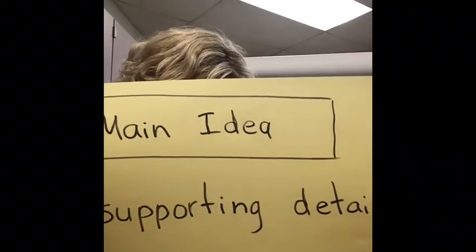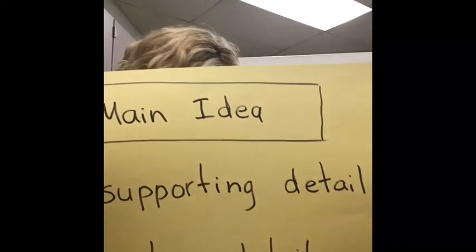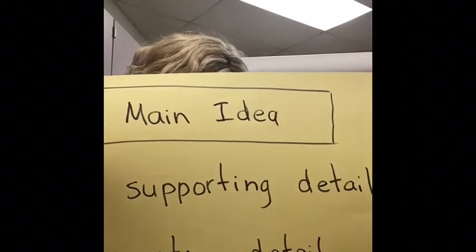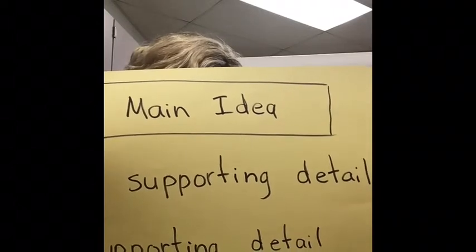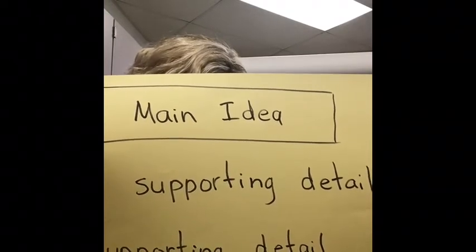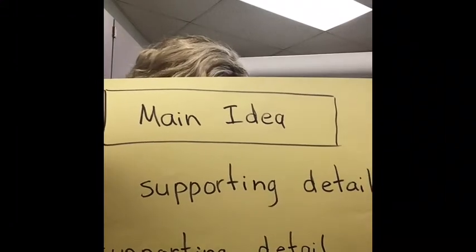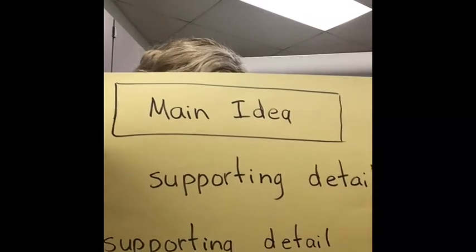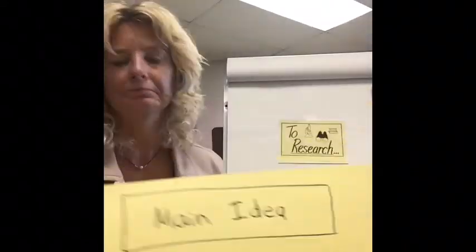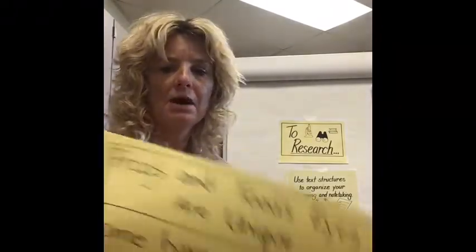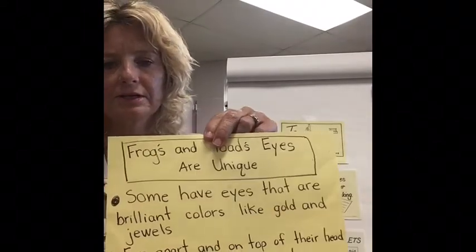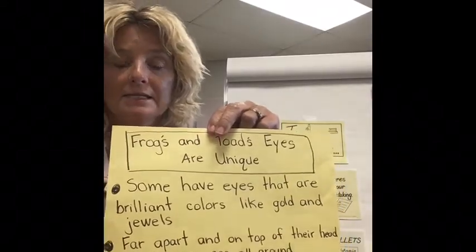So my main idea: frogs and toads' eyes are unique. And then the supporting details I have: some have eyes that are brilliant colors like gold and jewels; far apart and on top of their head so they can see all around; frogs and toads' eyes help them see at night; and both have an extra eyelid so they can see when they are swimming. So here is my box with my main idea and my bullets.